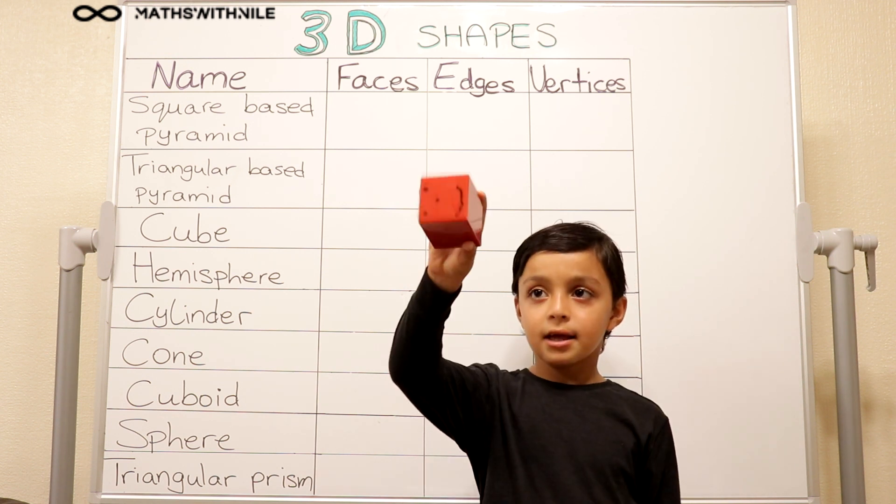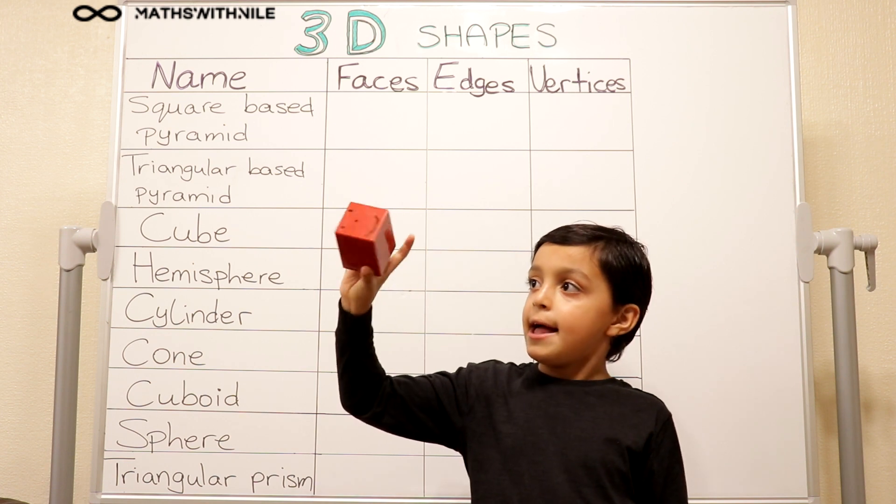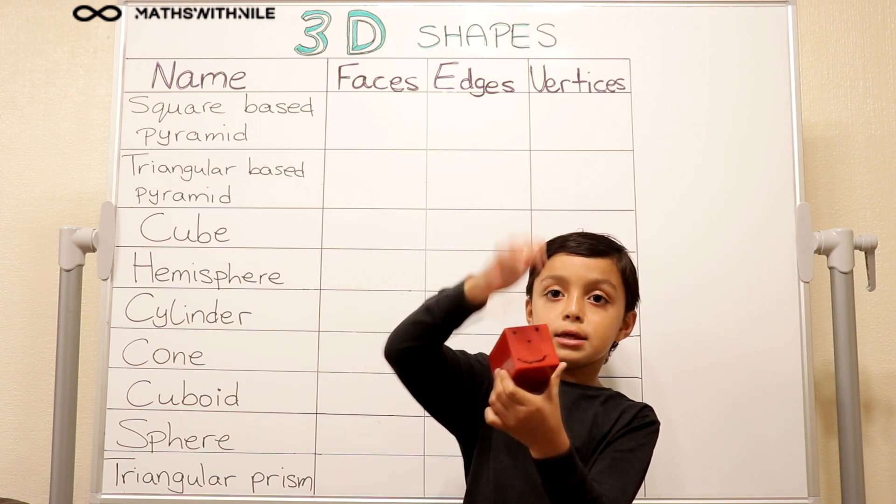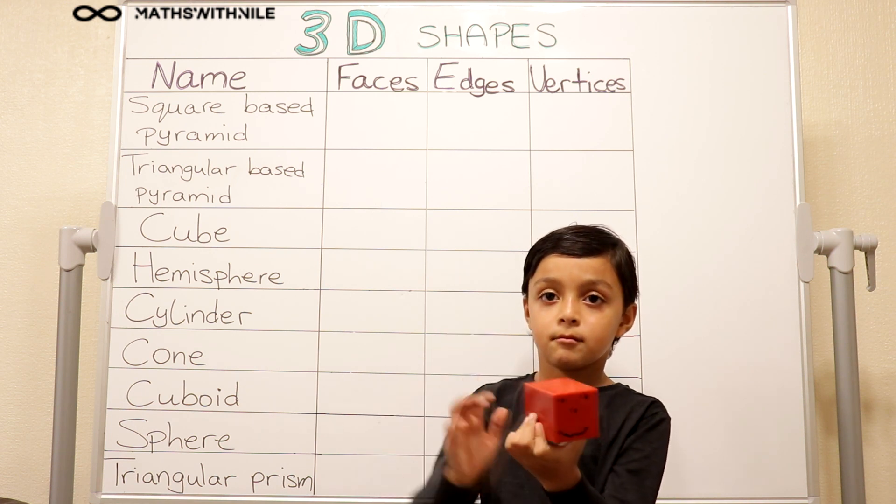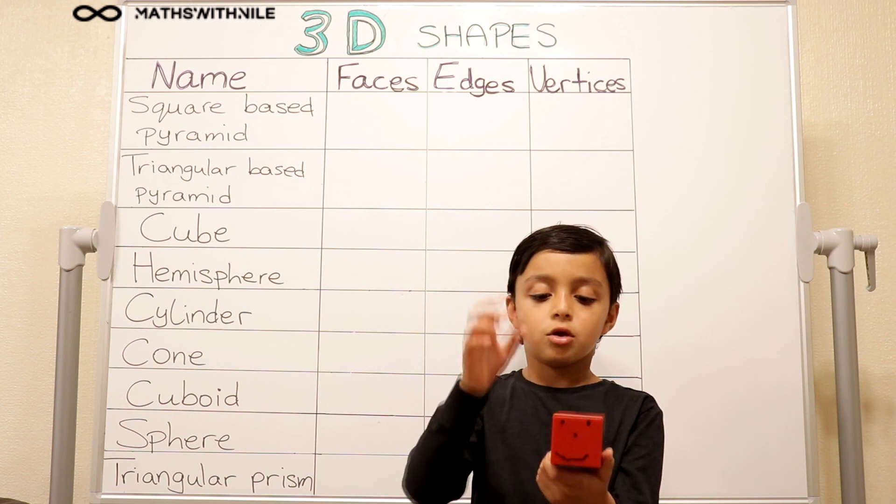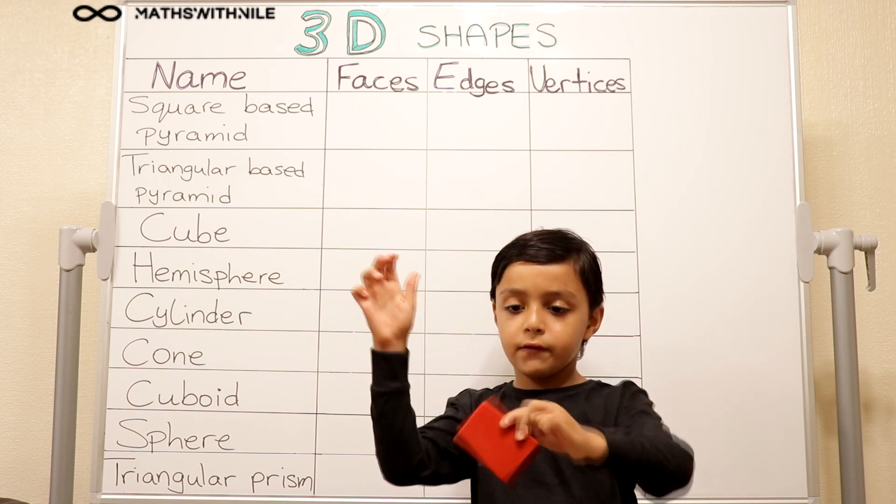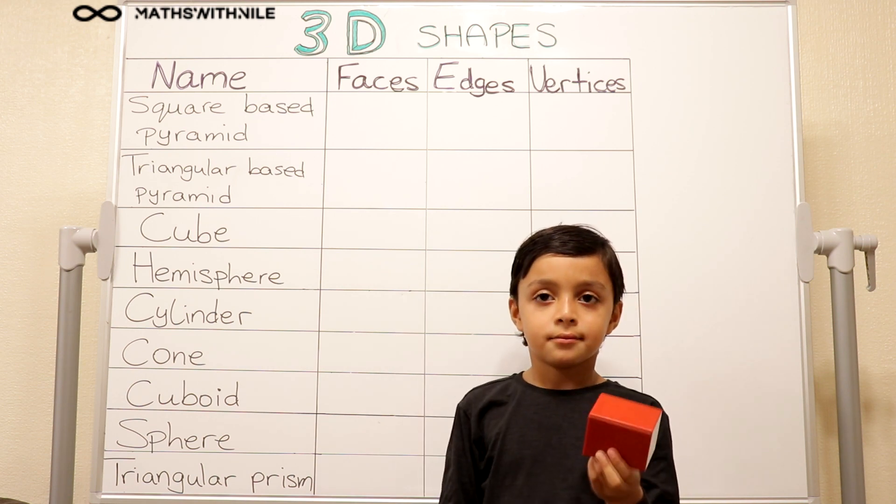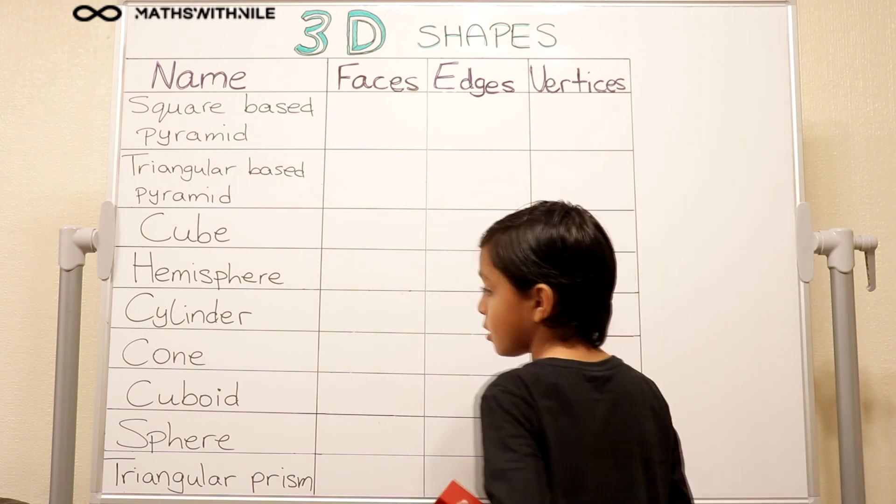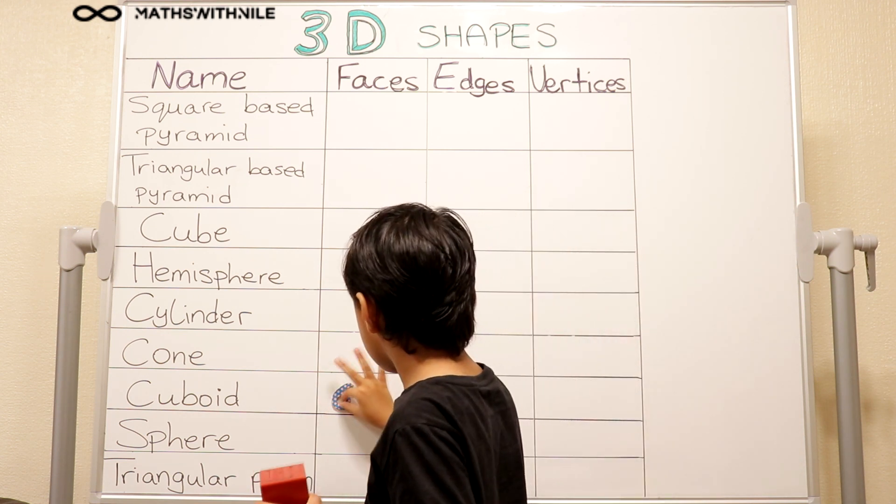And what have you got in your hand? A cuboid. What did you draw there? A face, because these are called faces. So let's start off by counting how many faces a cuboid has. Can you count them first? One, two, three, four, five, six. Six faces. You want to grab a six and put it.